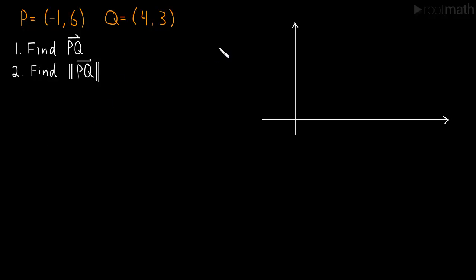So P is the point (-1, 6), so let's say right here, -1 in X, 6 in Y. And Q is the point (4, 3), so over by 4, up 3.